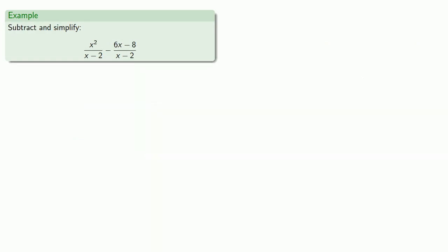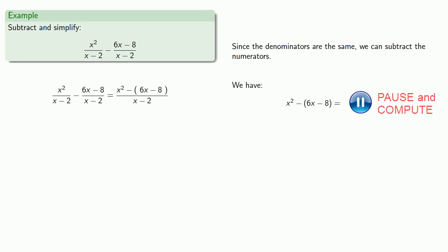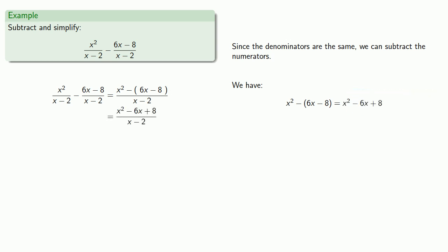How about a subtraction? Since the denominators are the same, we can subtract the numerators. Now we should be a little bit careful here. This is going to be x squared minus the quantity 6x minus 8, which will be... Again, it's possible this may simplify.